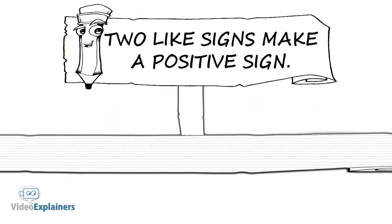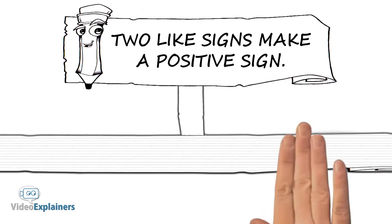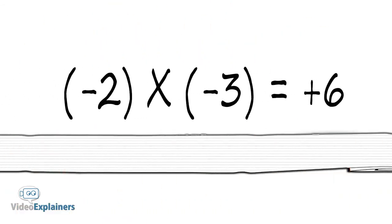Two like signs make a positive sign. So negative 2 times negative 3 equals positive 6.